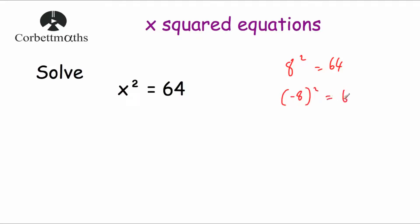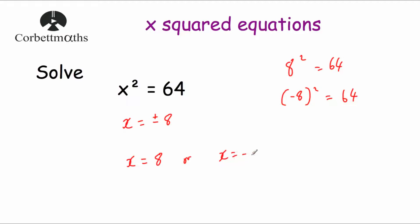Also remember that negative 8 times negative 8 is also equal to 64, because a negative times a negative is a positive. So we've got two solutions: x equals plus or minus 8, meaning x equals 8 or x equals negative 8.